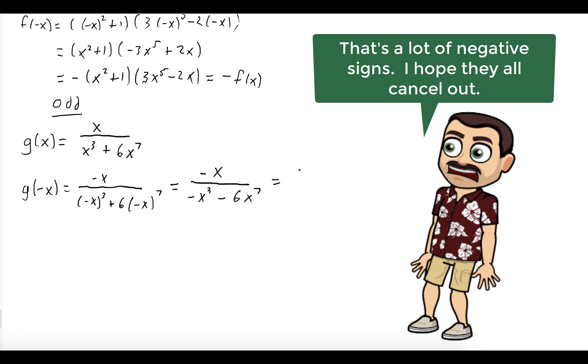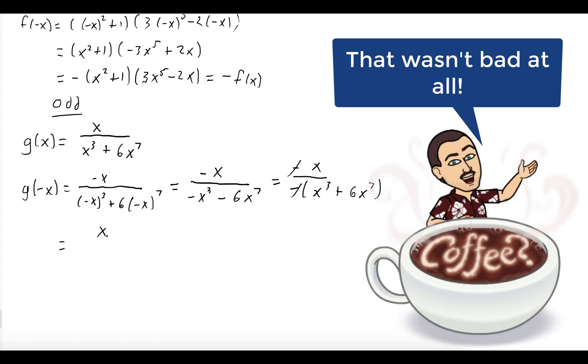We could factor out a -1 from the numerator and the denominator and cancel them out. You see we're just left with g(x). So since g(-x) equals g(x), g is even.